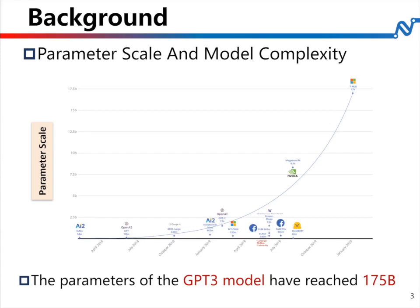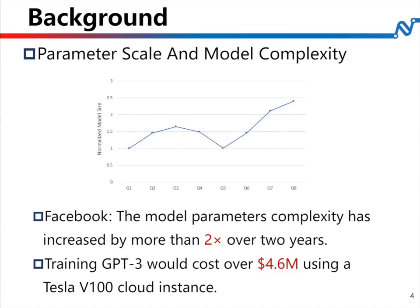In recent years, the parameter scale and complexity of deep learning models are growing rapidly. The number of parameters of natural language processing models, including GPT-2, Turing NLG, and GPT-3, has increased from 1.5 billion to 16 billion and 175 billion respectively. Facebook's model parameter complexity has increased by more than two times over two years. Training large models is very expensive — it costs over 4.6 million dollars to train GPT-3 using a Tesla V100 cloud instance. Such high cost limits research progress.